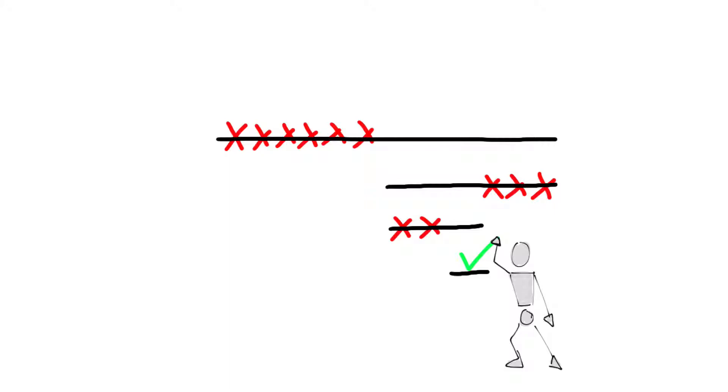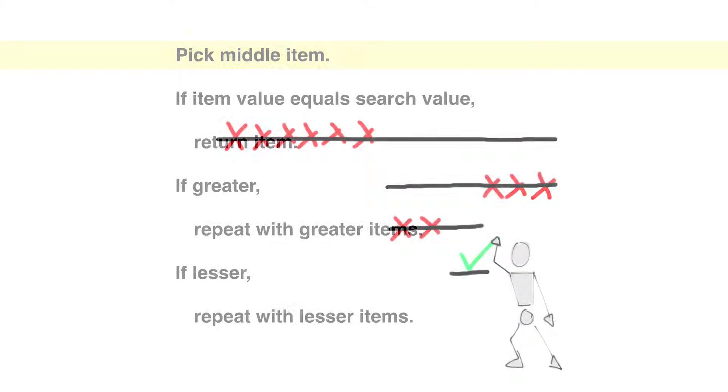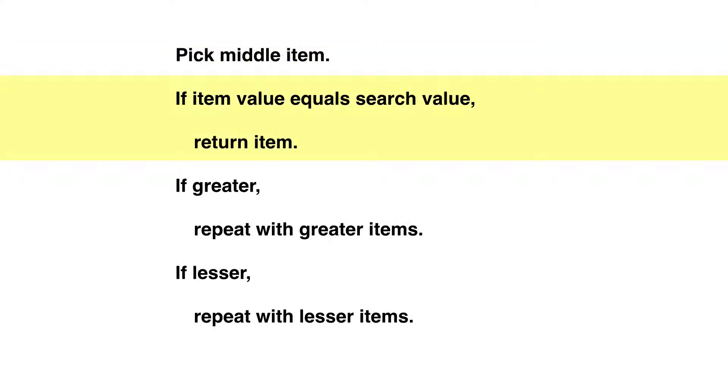Binary search takes a sorted array and keeps throwing away the irrelevant half until it converges on a single item. In pseudocode, pick middle item. If item value equals search value, return item. If greater, repeat with greater items. If lesser, repeat with lesser items.